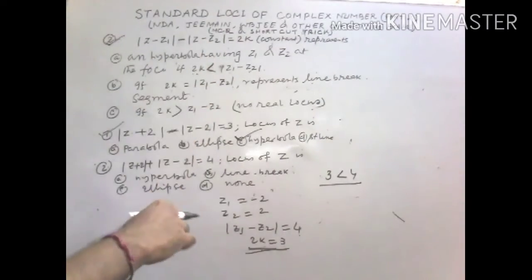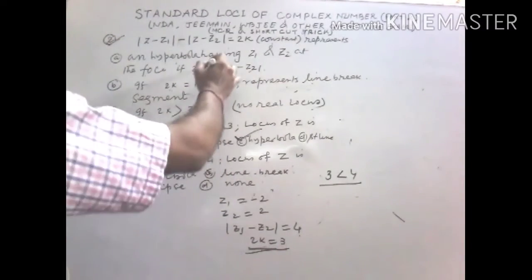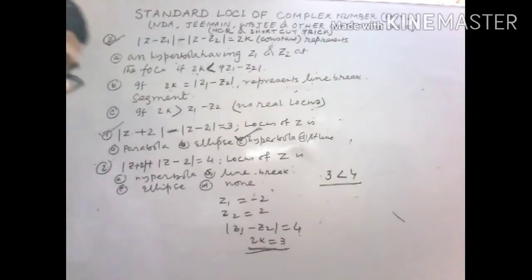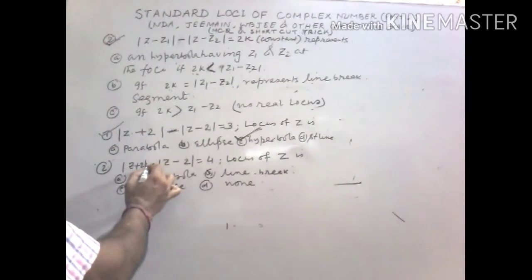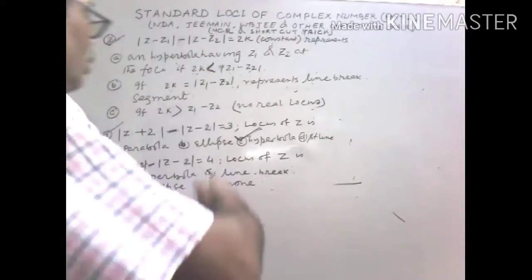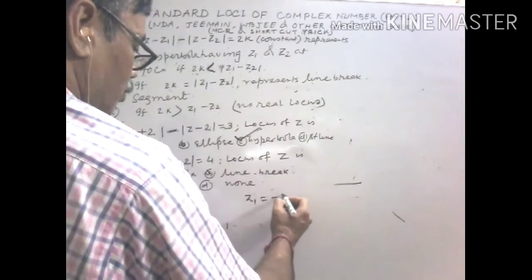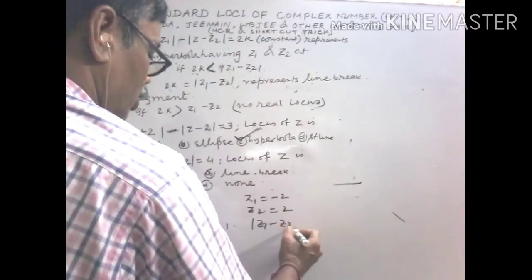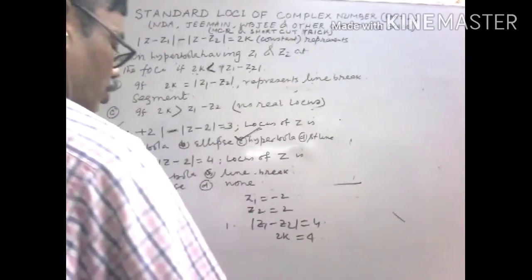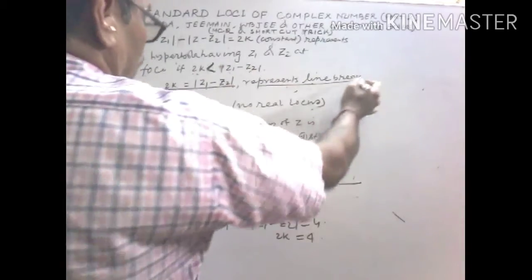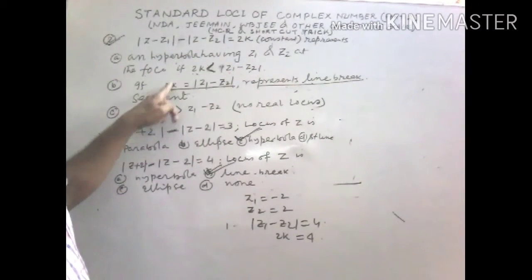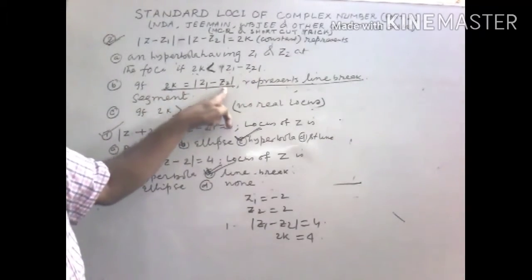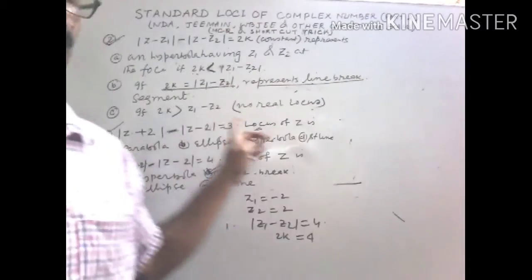Whenever an expression is given in difference form, think hyperbola. But check whether the conditions are satisfied: if 2k < |Z1 - Z2|, it is a hyperbola; if 2k equals |Z1 - Z2|, it is a line breadth; if 2k > |Z1 - Z2|, there is no real locus. Problem 2: |Z + 2| - |Z - 2| = 4. Here |Z1 - Z2| = 4 and 2k = 4, so it represents a line breadth.